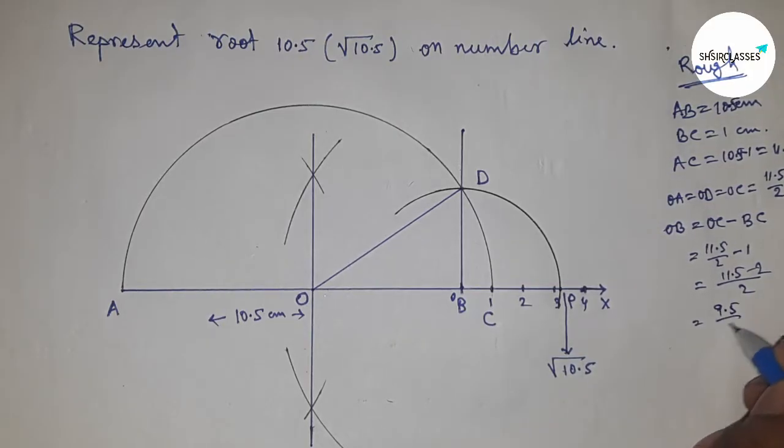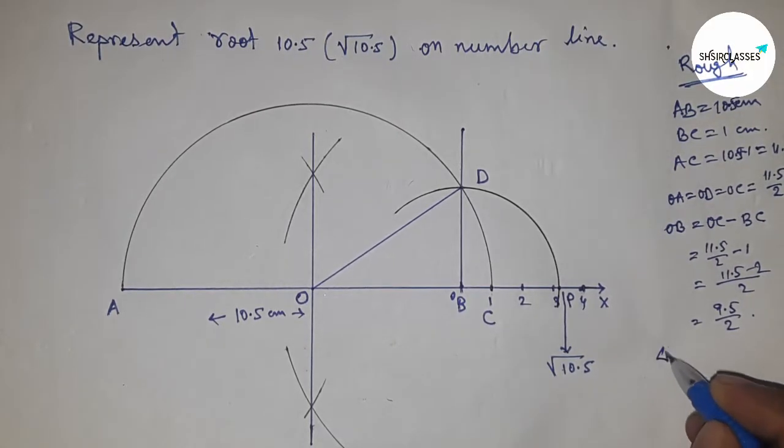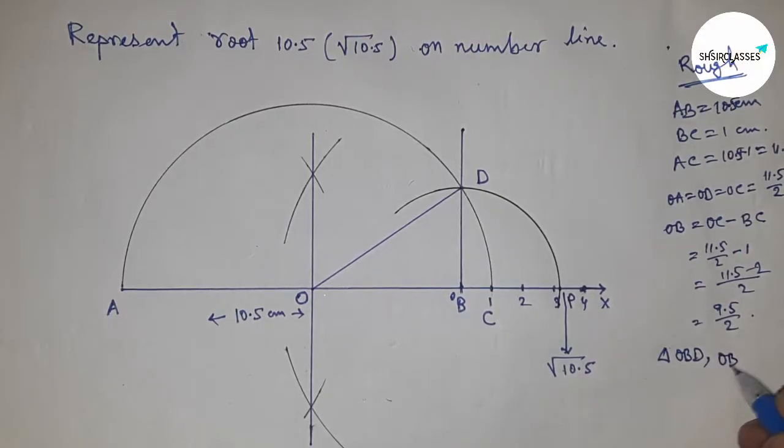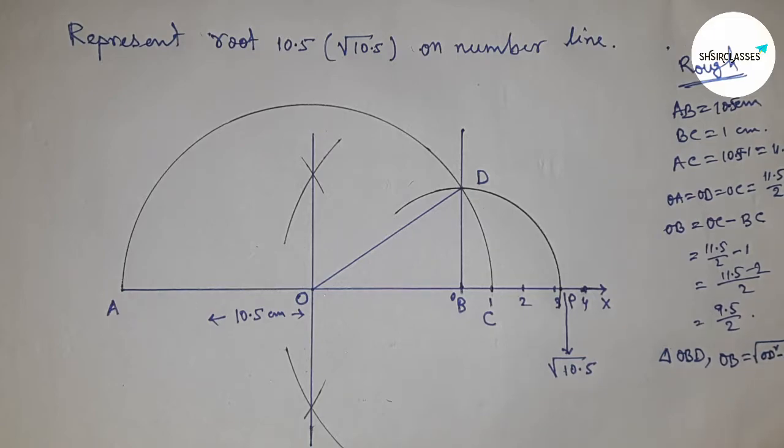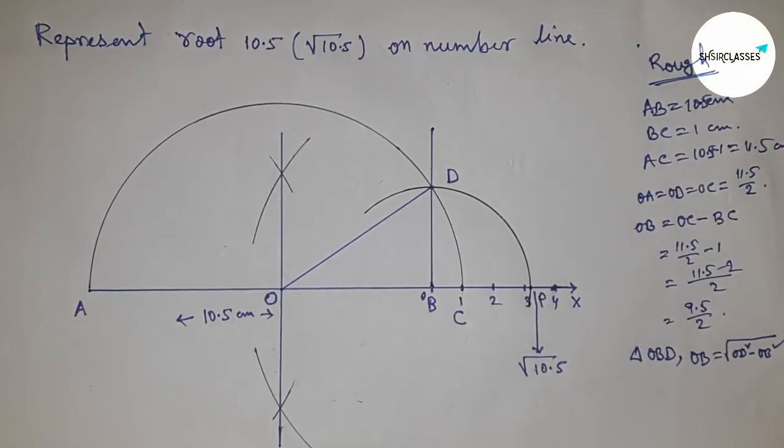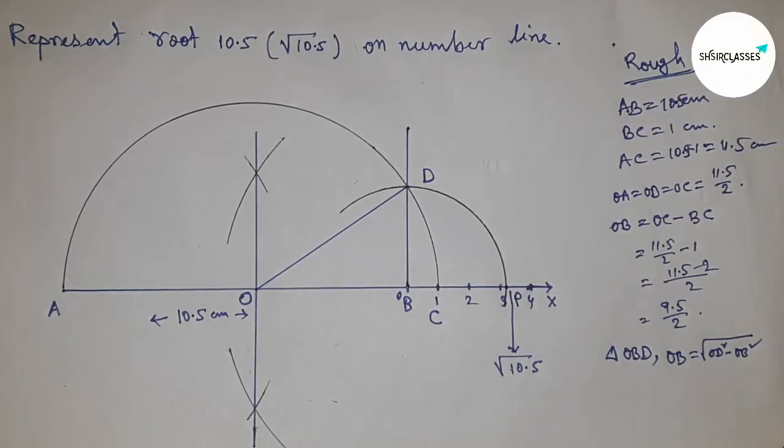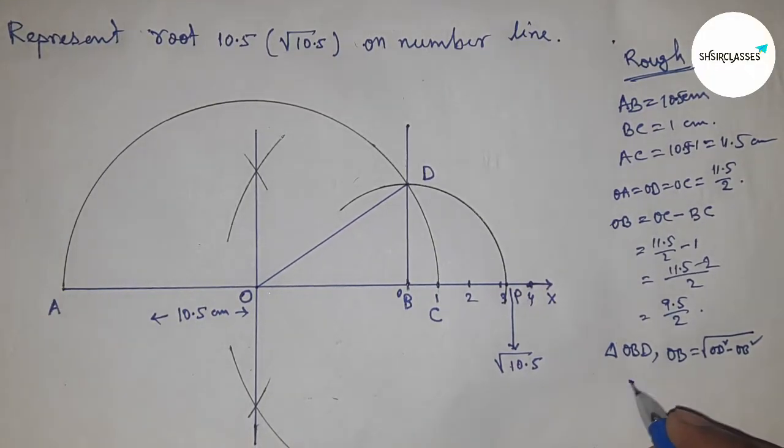In right angle triangle OBD, we can say that BD equals hypotenuse squared minus base squared. Here hypotenuse equals OD and base equals OB. Now putting the value of hypotenuse OD and base OB.